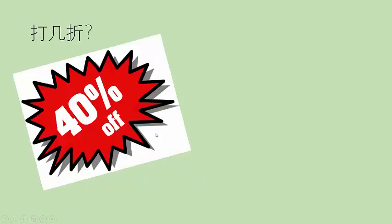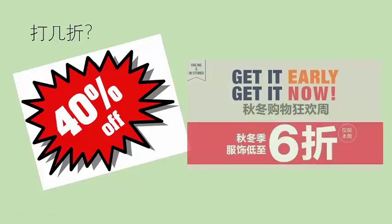So if in English we said it's 40% off, what would we say in Chinese? 打几折? It would be 打六折, because 100 minus 40 is 60 and you move the decimal place over one. That's how it works with 折.